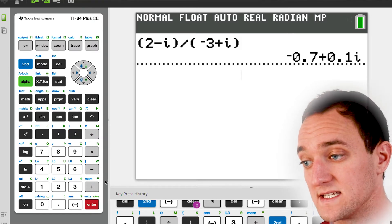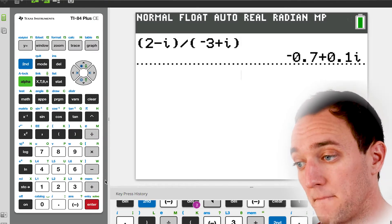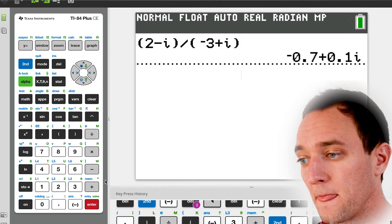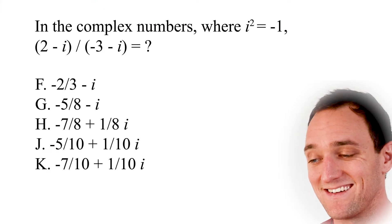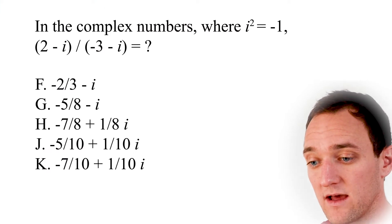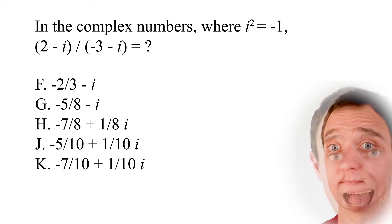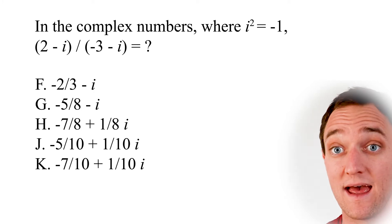And all we got to do is hit enter and boom. Now we've got negative 0.7 plus positive 0.1i. Now here's the little trick I said I was going to tell you about. If we look back at our answers, they're all fractions. However, here we don't have fractions. Help. What do we do?